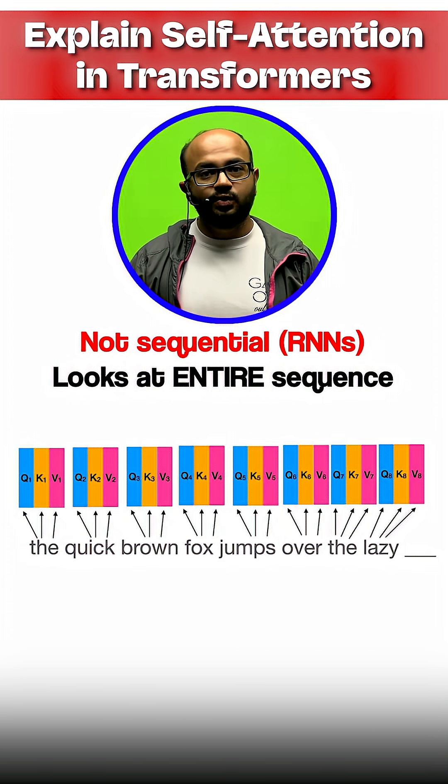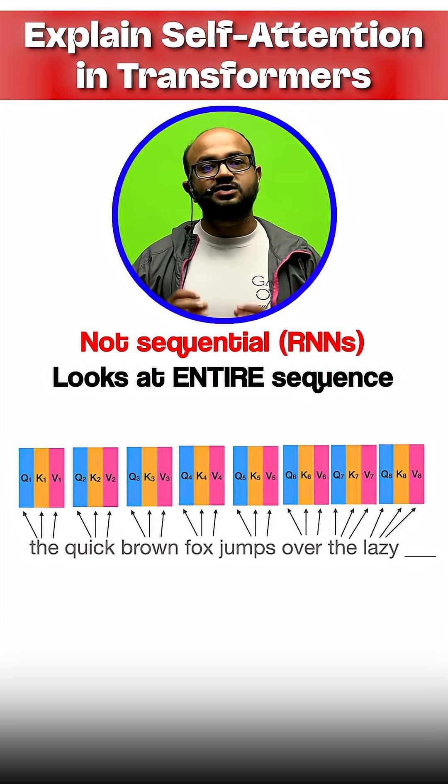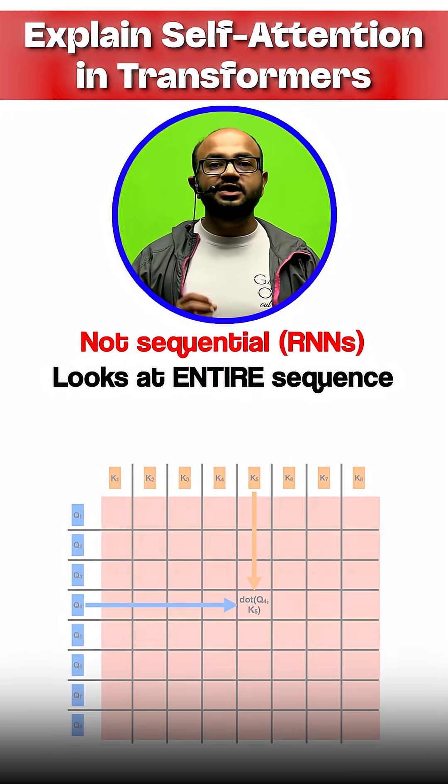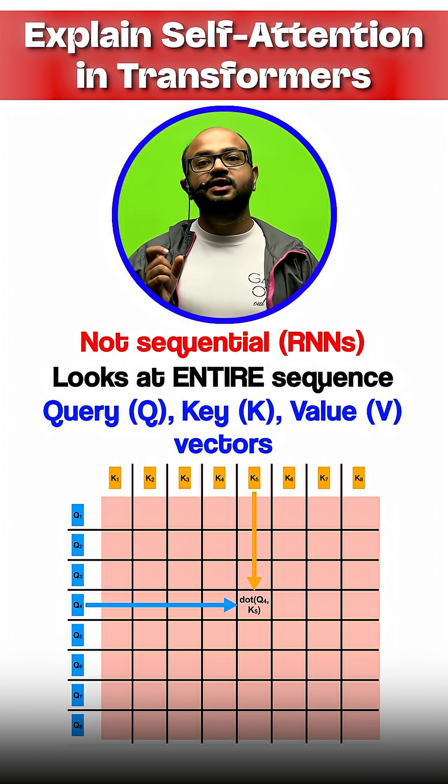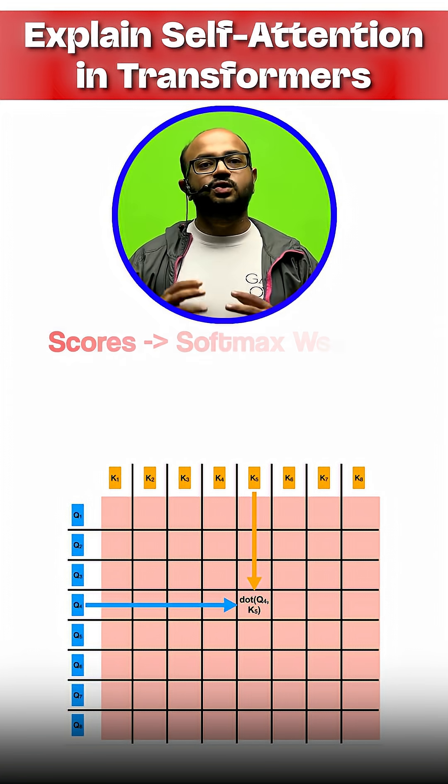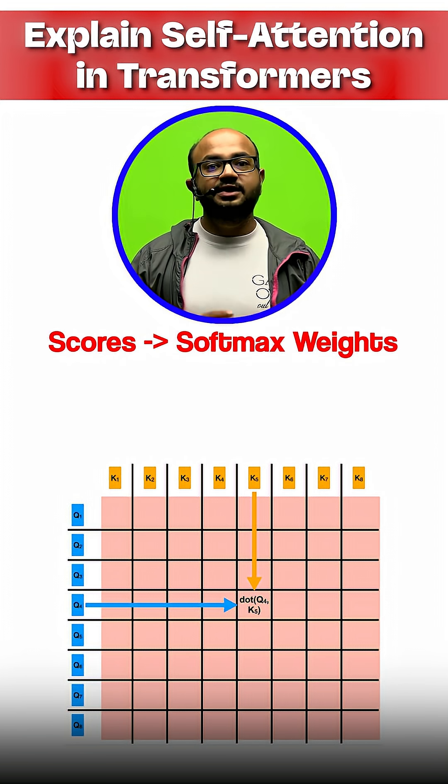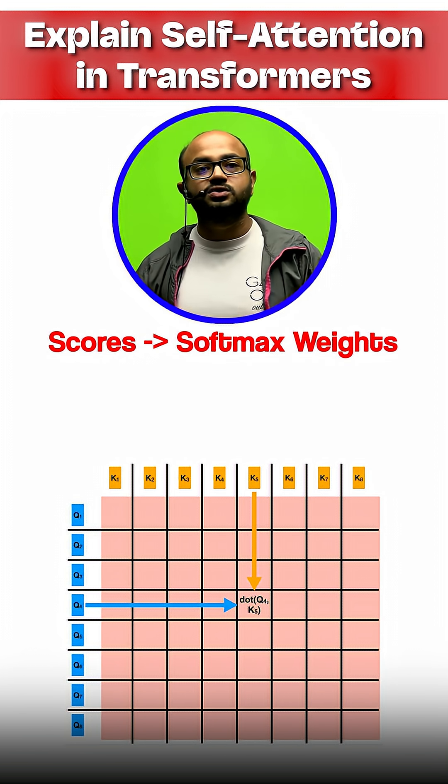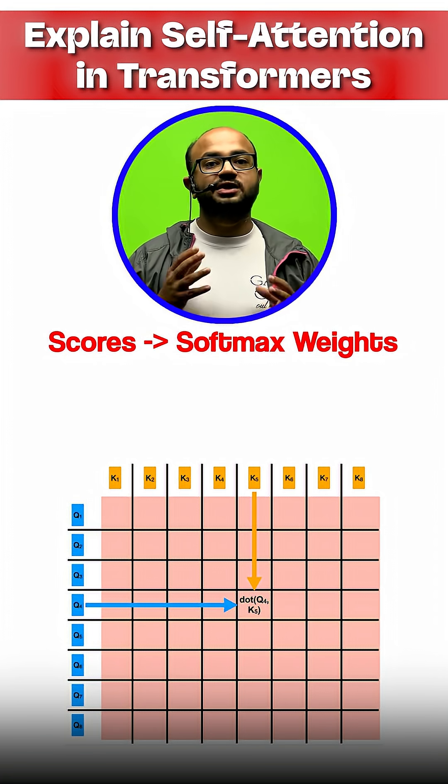For each word, it calculates scores against all other words using something called learned Query, Key, and Value vectors. These scores, normalized by Softmax, determine how much each word contributes to the current word's representation.